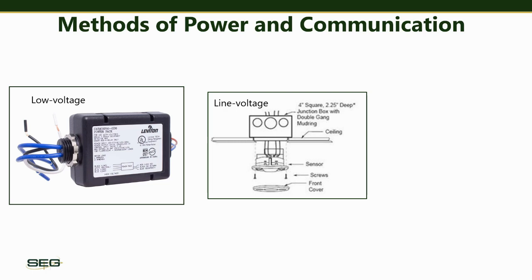Next up is line voltage. Line voltage sensors don't use a power pack, and they're suitable for applications where power pack installation is limited by a lack of space or access to junction boxes. Many only have the ability to switch a part of the load due to limits on how much power the sensor can safely handle, and they're often used for individual luminaire control in applications such as warehouses or for small loads.